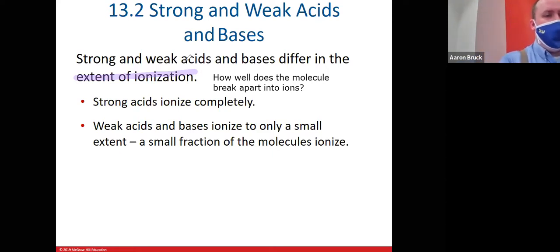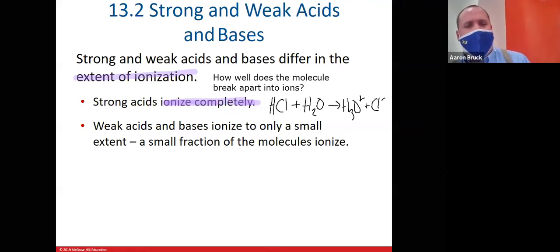What makes an acid strong or weak is based upon how well it breaks apart into those ions. We identify a strong acid as one that ionizes completely. If I look at the chemical equation for what happens to a strong acid like HCl, we will see that this reaction is a one-way street. All of the HCl turns into hydronium ion, H3O+, and chloride ion. As a result, strong acids would be classified as strong electrolytes.